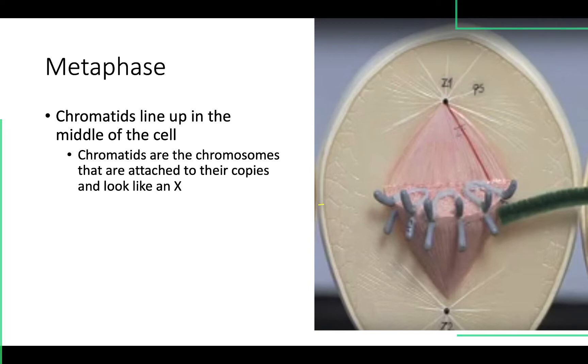You can see that chromatid formation — this is one sister chromatid, here's another sister chromatid, and together that's one chromatid: the chromosome and its copy. And they're lined up in the middle.